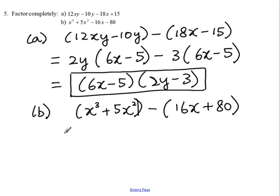And now from the first group we can factor out x² and then the leftover would be x plus 5 minus. From the second group we want to factor out 16. So the leftover would be x plus 5.